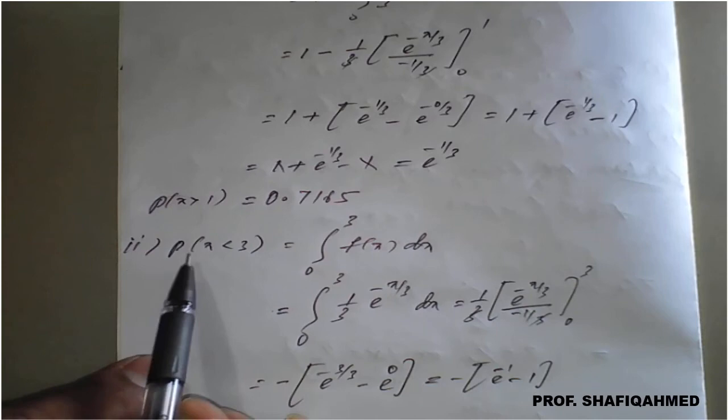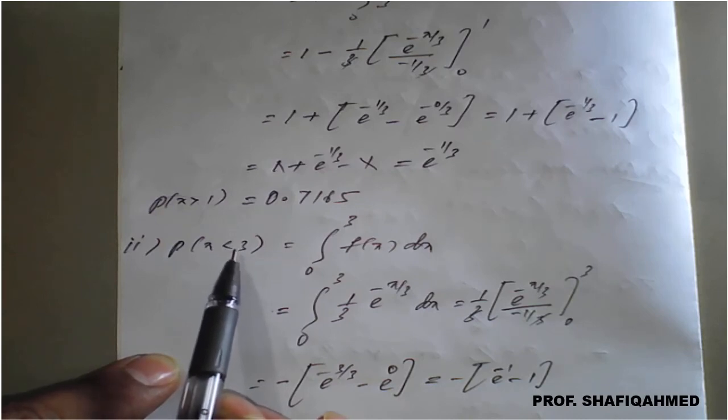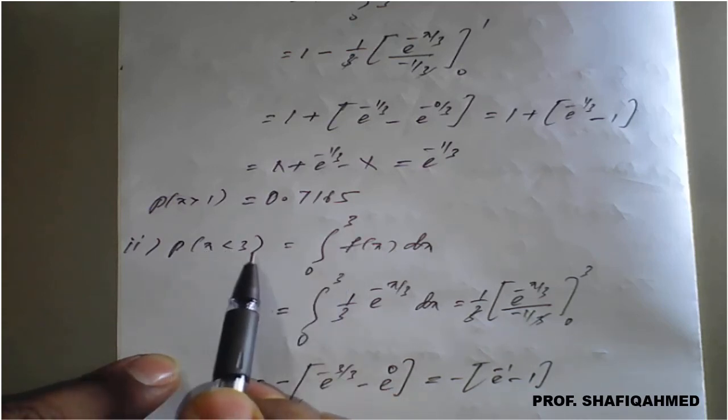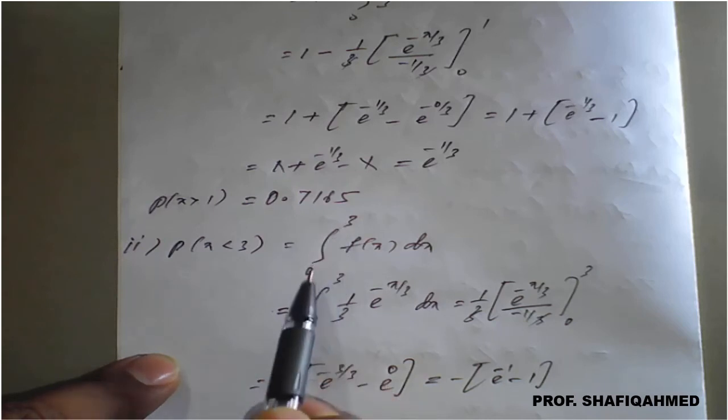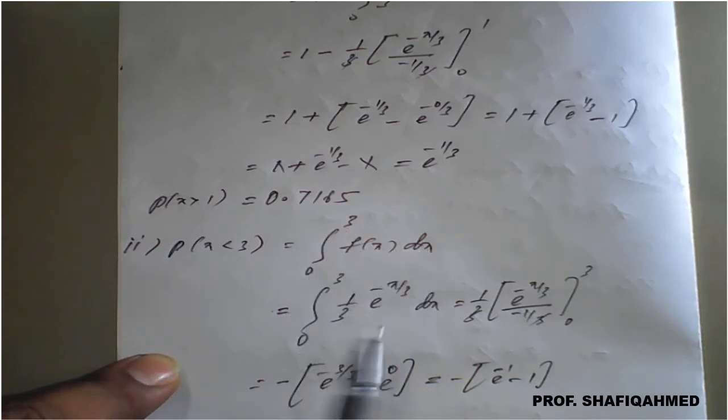Similarly, second one, P(x < 3). Strictly less than 3 or less than or equal to 3, both we are going to consider for the integral. So therefore 0 to 3, x less than 3 means we are going to consider the range 0 to 3 only of f(x) dx.